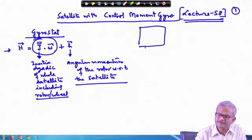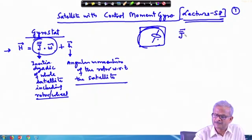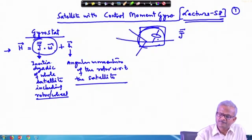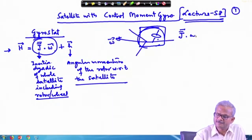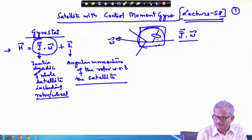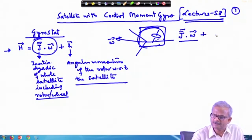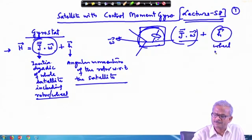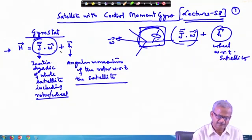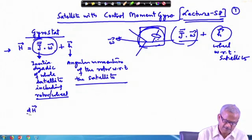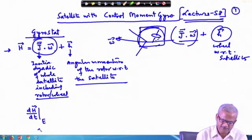Suppose this is the satellite and there is a rotor inside. If the rotor is not rotating, the moment of inertia is written as J̄, and if the body rotates at angular velocity ω, this gives the associated angular momentum. If the wheel is also rotating with respect to the satellite, you add another part. So there are two parts: one for the body and one for the wheel relative to the satellite. Then we take the derivative dH/dt with respect to the inertial E frame.